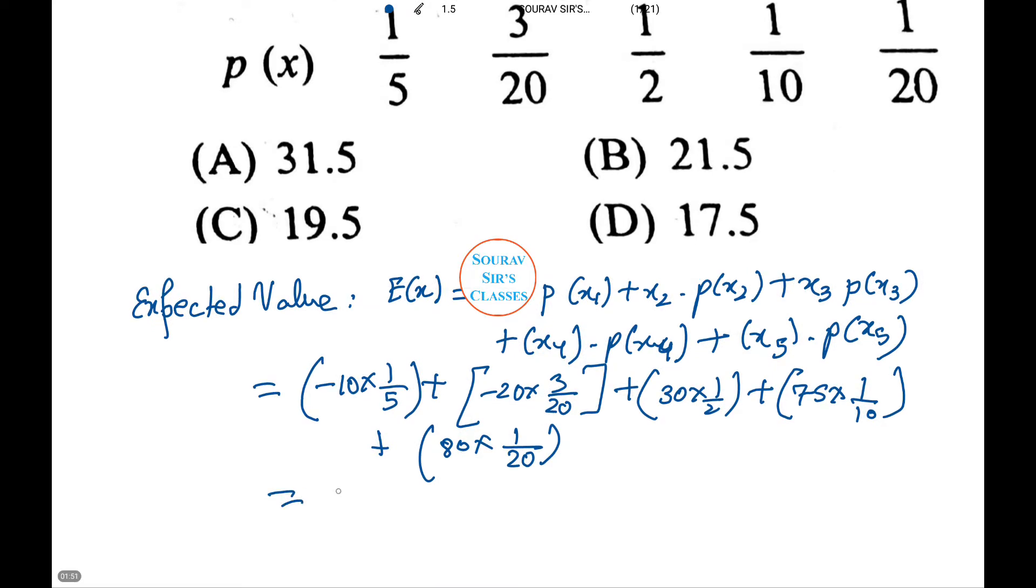This equals minus 2 minus 3 plus 15 plus 7.5 plus 4 which equals 26.5 minus 5 equals 21.5. That is option number B.